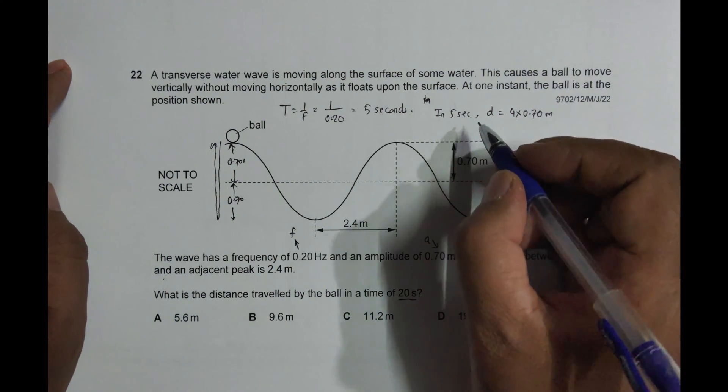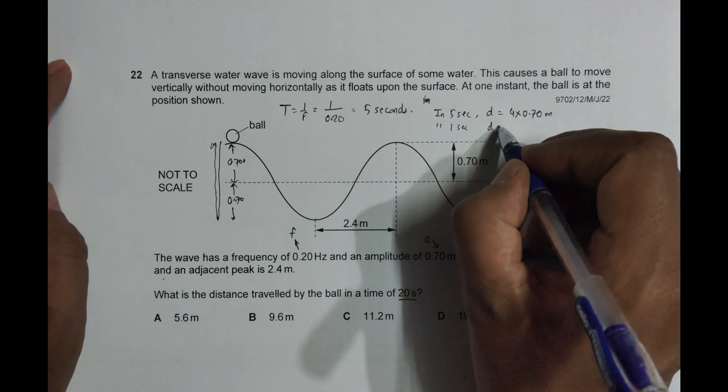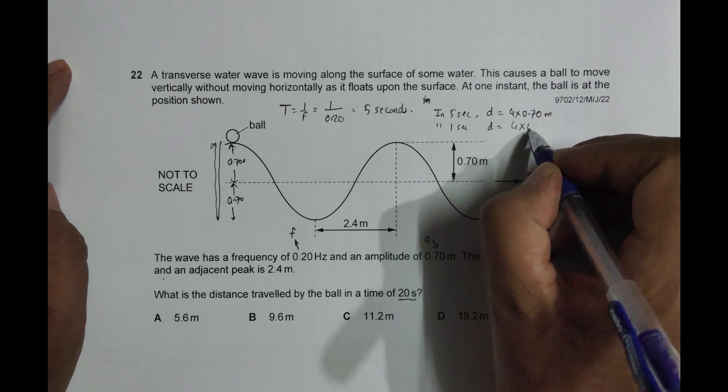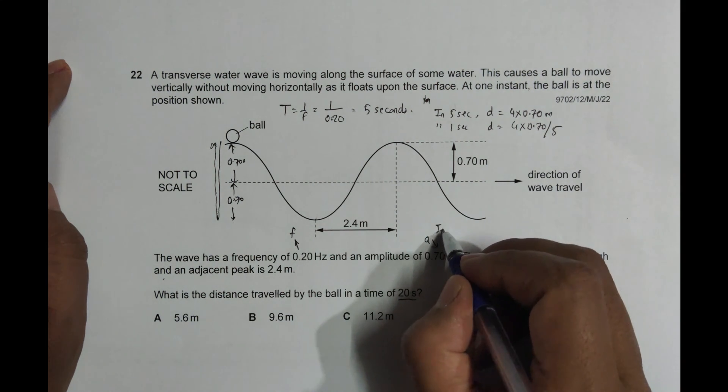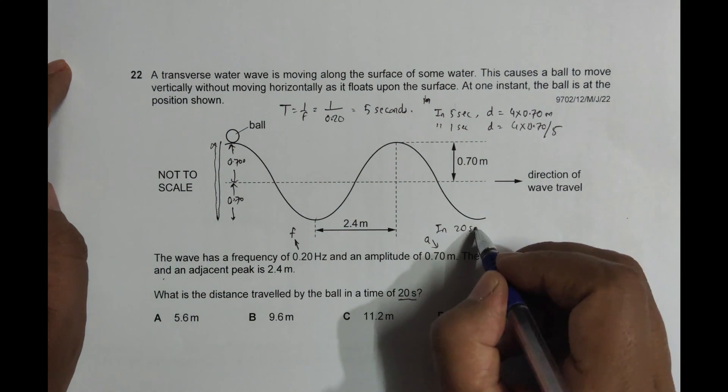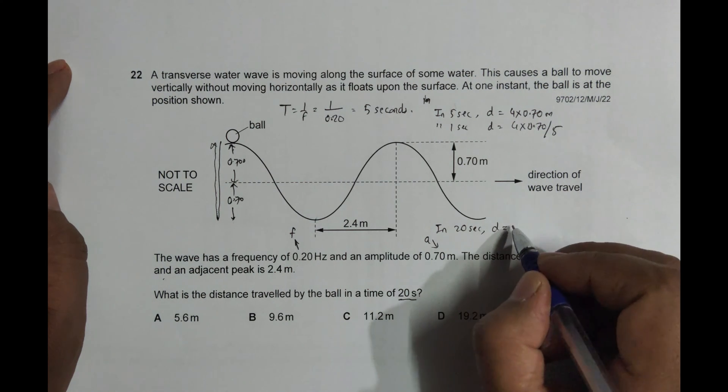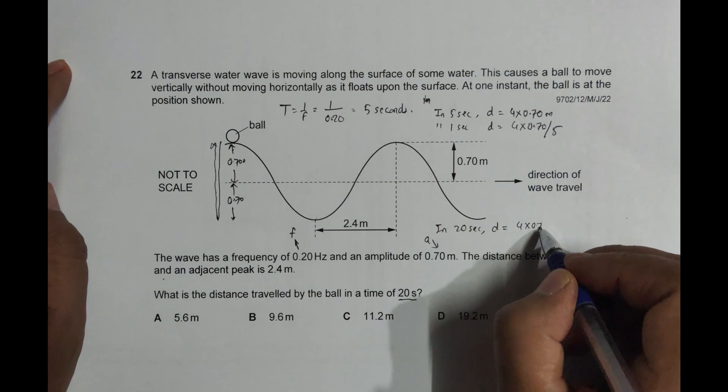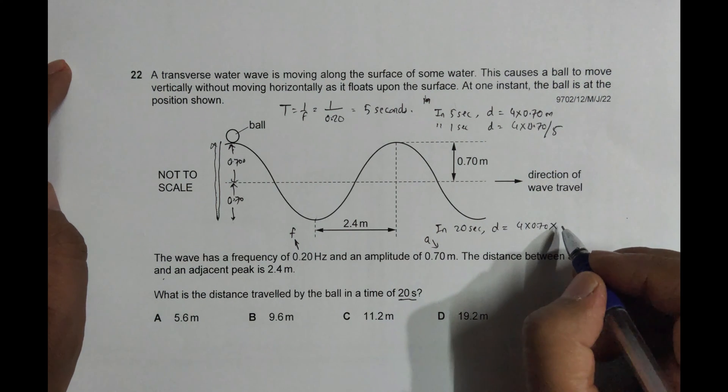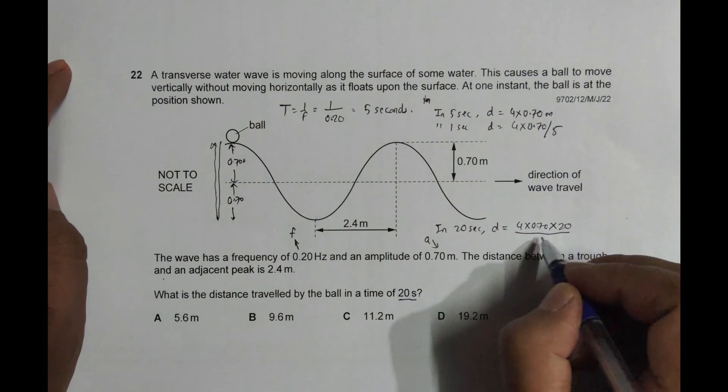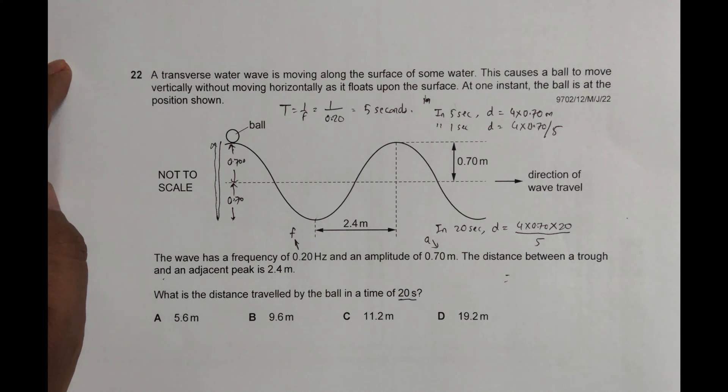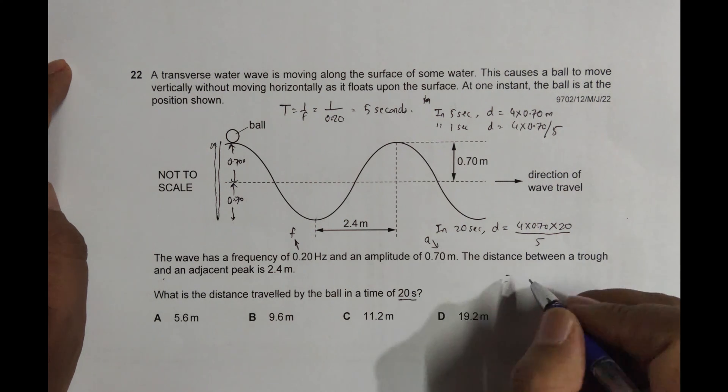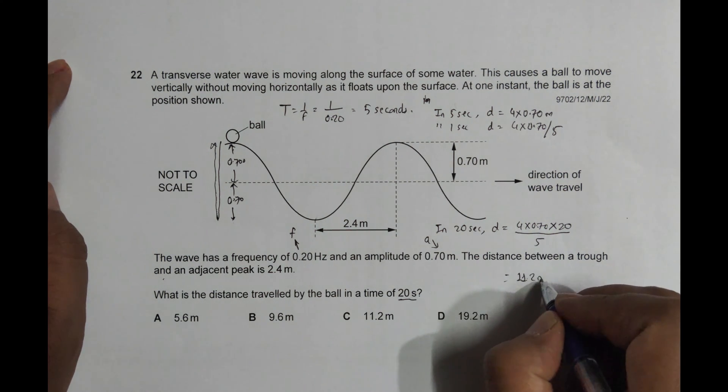That was in one time period. So in one second, the distance equals 4 into 0.70 by 5. And then in 20 seconds, D equals 4 into 0.70 into 20 by 5. So it will be equal to 4 into 0.70 into 20 by 5, which equals 11.2 meters.